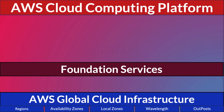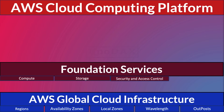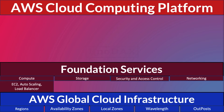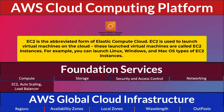Local zones, wavelength, and outposts are there to help improve the network performance of applications that have low latency requirements. Foundation services leverage AWS global infrastructure and can be classified primarily into compute, storage, security and access control, and networking categories. AWS has EC2 — Elastic Compute Cloud — in the compute category, one of the oldest AWS services. EC2 is used to launch virtual machines, called EC2 instances, on the cloud.